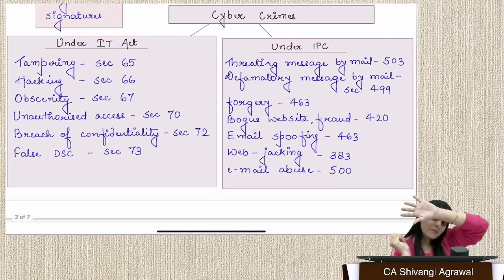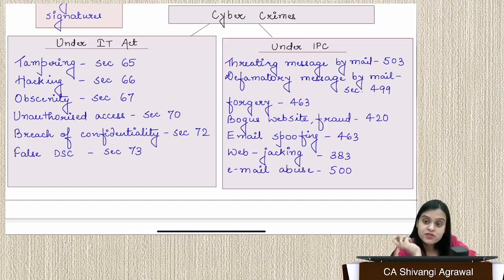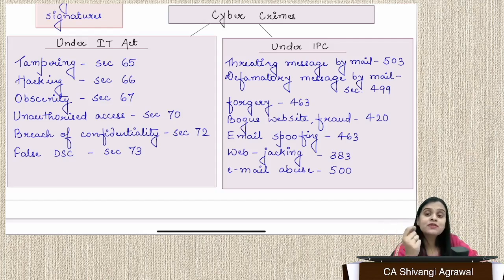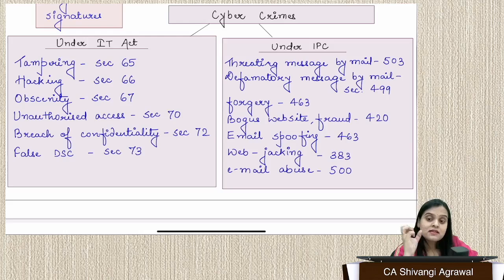Before we go on, let's discuss cyber crime. We have crimes in the physical space — for example, trespassing is when someone intrudes into your physical place. Similarly, if any criminal activity takes place in cyber space — using a computer, technology, or a network — and someone is intruding into that cyber space, that is a criminal activity taking place in cyber space, which is cyber crime.